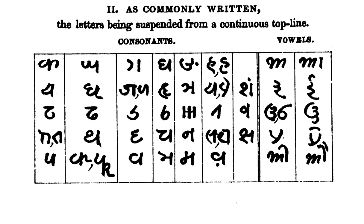Kaithi script derives its name from the word Kayastha, a social group of India that traditionally consists of administrators and accountants. The Kayastha community was closely associated with the princely courts and colonial governments of North India, and were employed by them to write and maintain records of revenue transactions, legal documents, title deeds, general correspondence, and proceedings of the royal courts and related bodies. The script used by them acquired the name Kaithi.